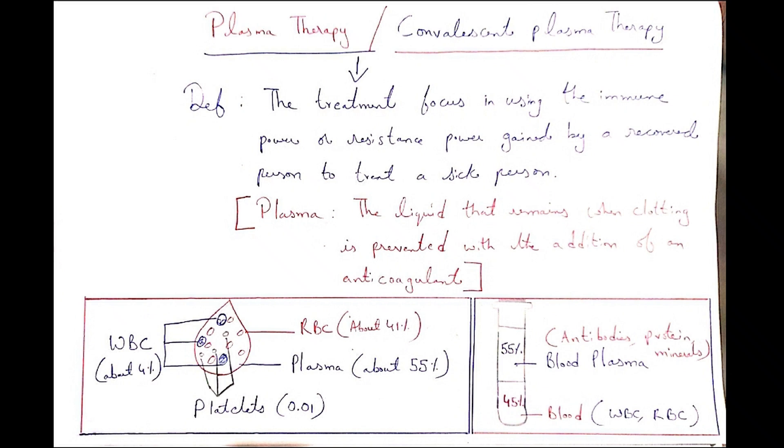55 percent is blood plasma and 45 percent is blood. In blood plasma, antibodies, proteins, and minerals are available. In blood, white blood cells and red blood cells are available. These are separated by anticoagulant.